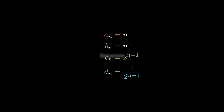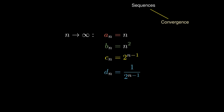A natural question to ask is that of convergence. If we take n all the way to infinity, the first sequence with general term n goes to infinity. The second, n squared, goes to infinity at a much faster rate. Likewise, 2 to the n minus 1 approaches infinity even faster. But the fourth sequence — 1 over 2 to the n minus 1 — takes the reciprocal of a very large number, which approaches 0. We say that sequence d_n converges to 0, while all other sequences diverge.